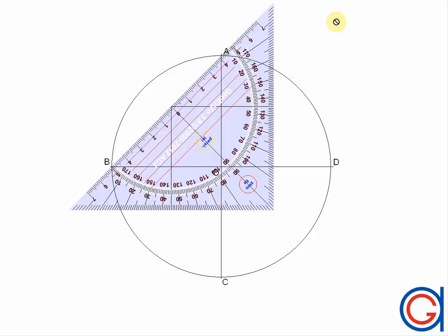Our second diameter will intersect our circumference at points B and D, as can be seen here in the video.